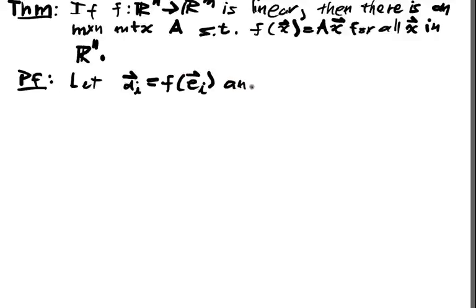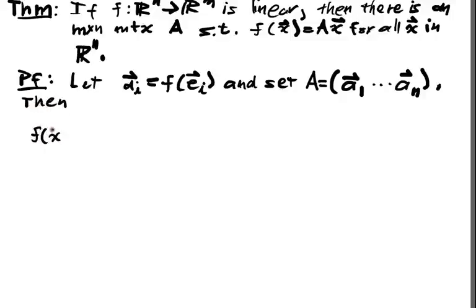So let A equal to the matrix obtained by joining all of these columns. So this is a_1, my vector a_1, all the way up to a_n. Then we just use linearity.